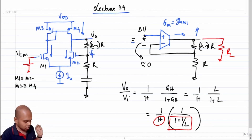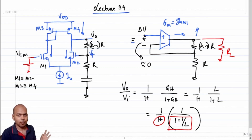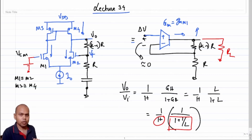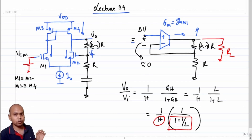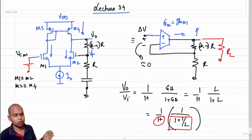The loop gain is a function of GM, and GM is a function of process, voltage, and temperature. In order to make the closed loop gain V_out/V_I independent of process, voltage, and temperature, we need to ensure that the loop gain is very high. If L is very high, V_out/V_I becomes insensitive to temperature variation. If the loop gain is not very high, the gain will depend on temperature, time of day, and so on — which we do not want. So we are striving to get larger and larger loop gain.